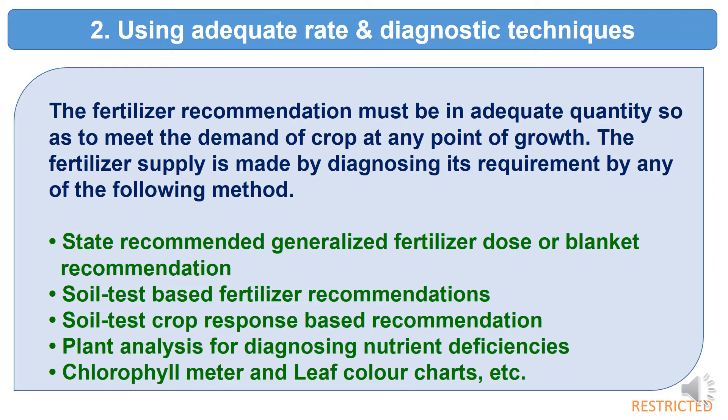The second improvement measure is using adequate rate and diagnostic techniques. Fertilizer recommendations must be in adequate quantity to meet the demand of a crop at any point of growth. The fertilizer supply is determined by diagnosing its requirement, starting with state-recommended generalized fertilizer doses or blanket recommendations.